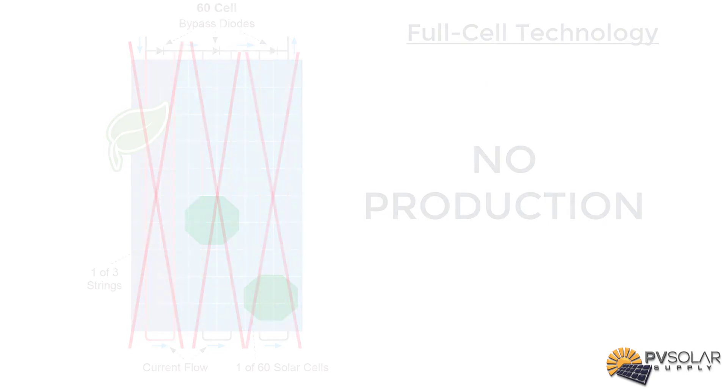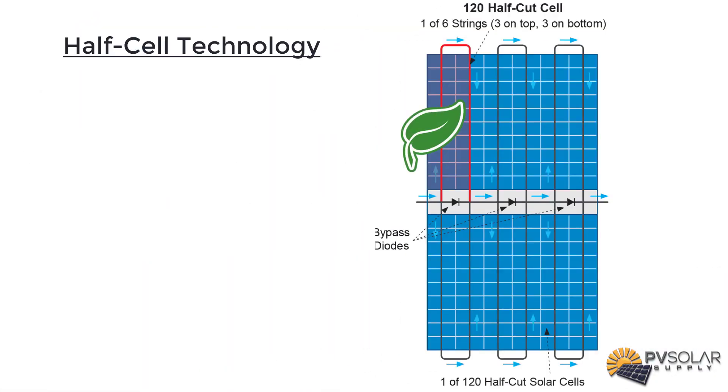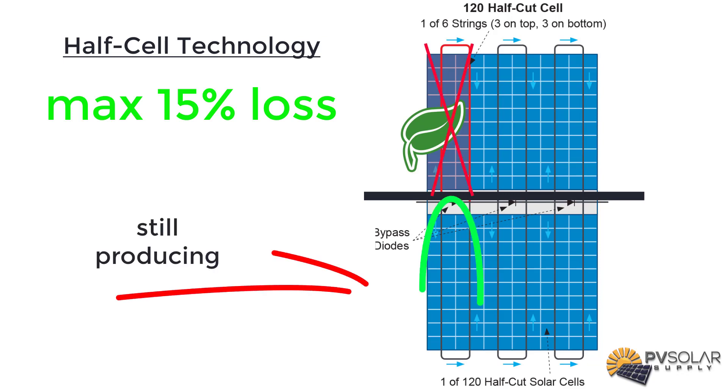Now compare this to the new half cell split module technology. Half cell and split module means when the same shading occurs, where we lost 30% of the production of the panel, here it's only 15% or even less.